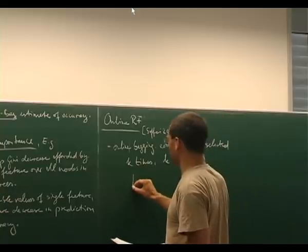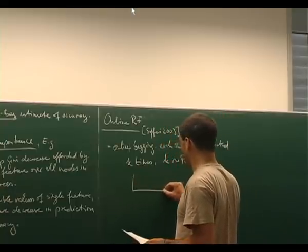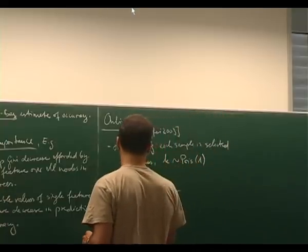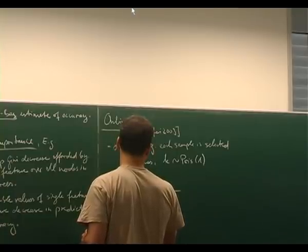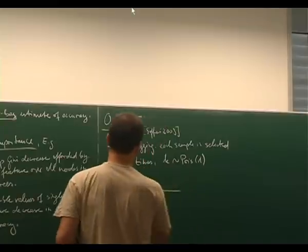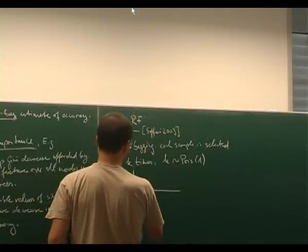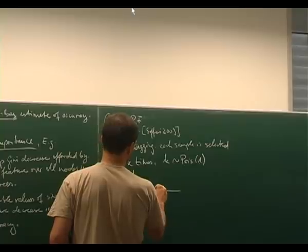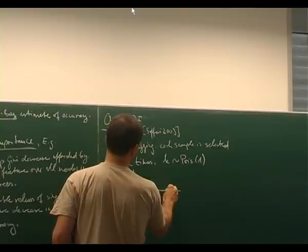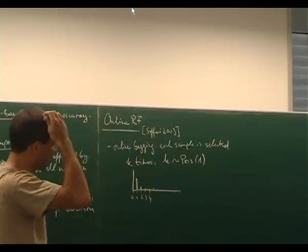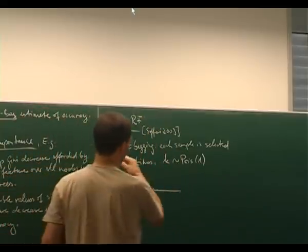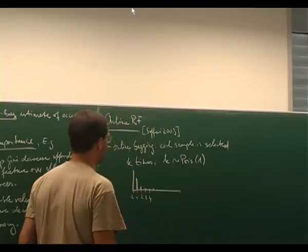So if you look at the Poisson distribution, this is how often you select the same sample, and for parameter 1 it looks something like this. So you have a non-zero probability of selecting your sample a hundred thousand times, but it's negligible—it's essentially an exponential decay.